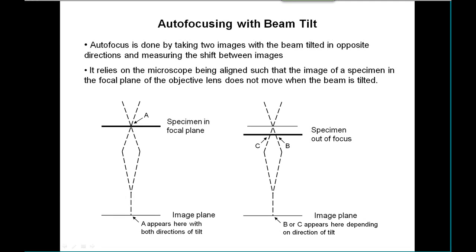Now let's talk about focusing. Auto-focusing is done using an old standard technique of taking two images with the beam tilted in opposite directions and measuring the shift between the images. If the specimen is in the focal plane, a point on the specimen appears at the same place in the image with both directions of tilt. But if we're out of the focal plane, the tilted beam projects to a different image point in the two conditions of tilt, meaning we get a shifted image in the two cases.